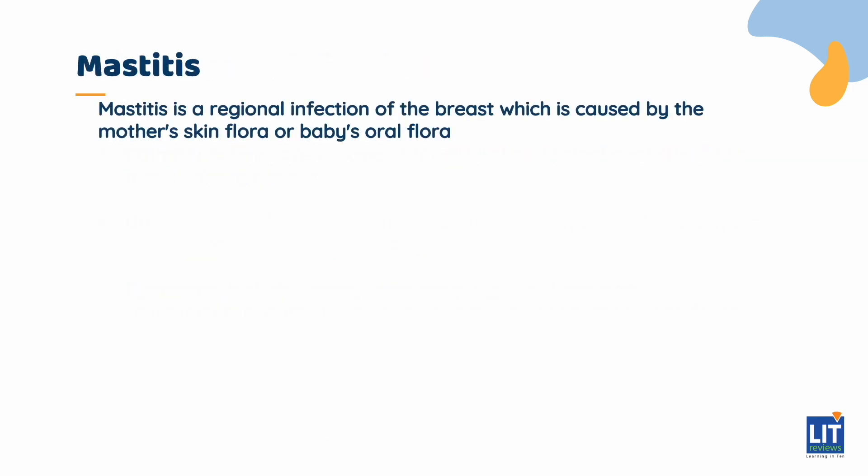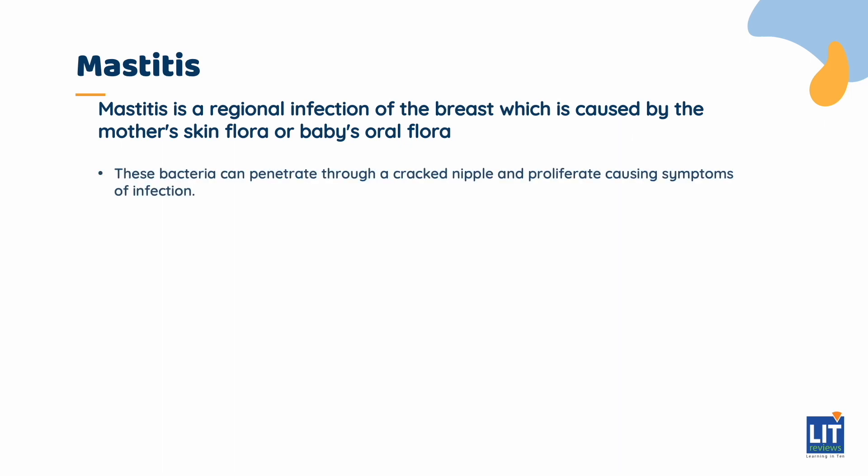Mastitis is a regional infection of the breast, which is caused by the mother's skin flora or baby's oral flora. These bacteria can penetrate through cracked nipples and proliferate, causing symptoms of infection. Commonly, lactating women will have warm, diffusely tender, and firm breasts, especially at the time of breast engorgement and milk letdown. These are normal signs and are not signs of mastitis.